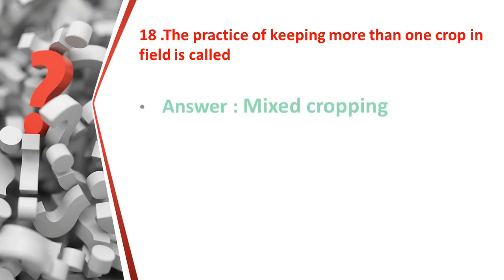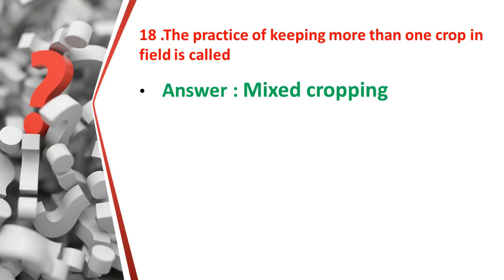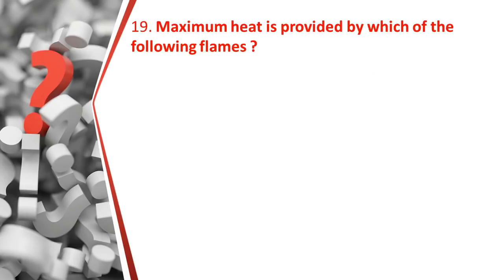The eighteenth question: the practice of keeping more than one crop in a field is called what? The answer is mixed cropping. So more than one crop grown in a field is called mixed cropping.